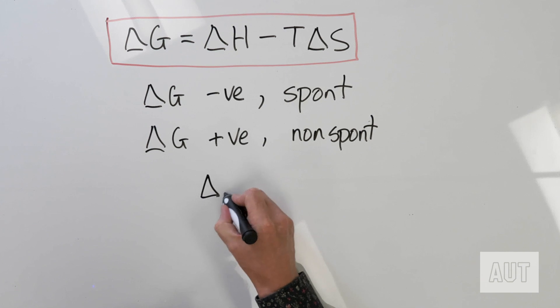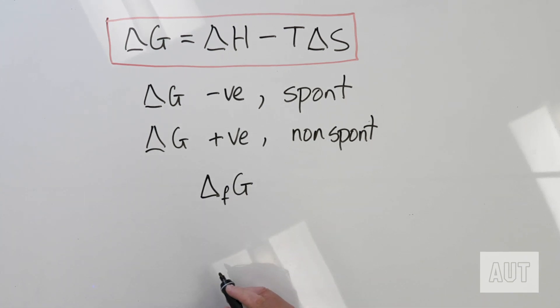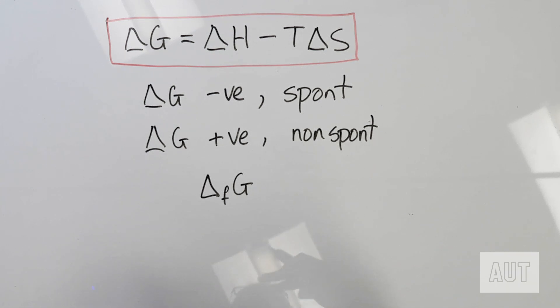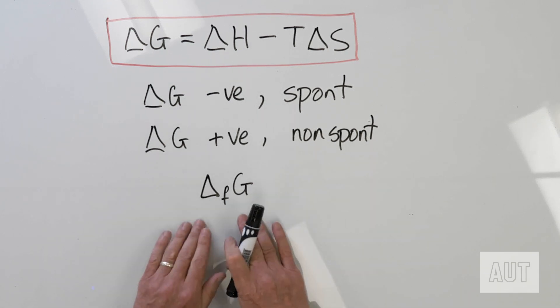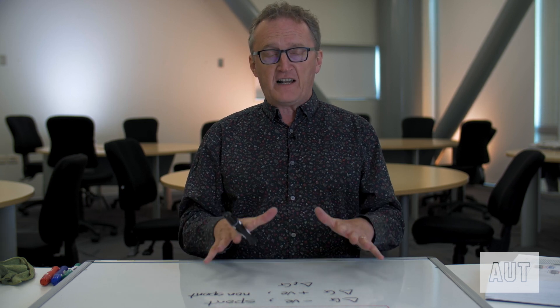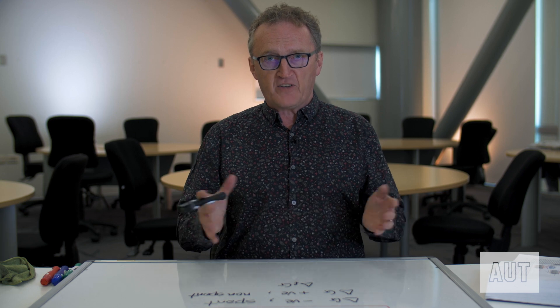As with all of chemistry — first things first — we saw that enthalpy was a state function, we saw that entropy was a state function, and Gibbs energy is also a state function. That means we can do Hess's law type calculations using Gibbs energies, using Gibbs energy of formation values. Like enthalpy of formation and standard entropy values, you will find these in tables in books, and you can use them to calculate values of Gibbs energy change for any particular reaction.